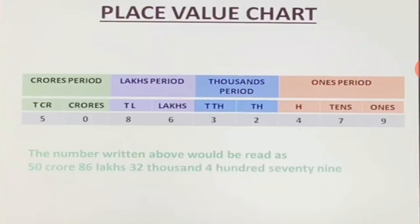Now, the place value chart. For the place value chart, first we write the periods: ones period, thousands period, lakhs period, and crores period. In the ones period, we have ones, tens, and hundreds. In the thousands period, we have thousands and ten thousands. In the lakhs period, we have lakhs and ten lakhs. In the crores period, we have crores and ten crores.